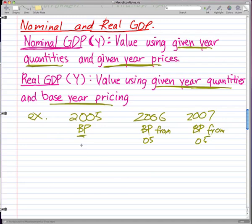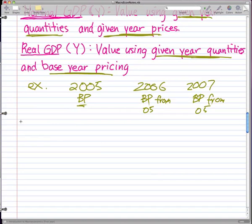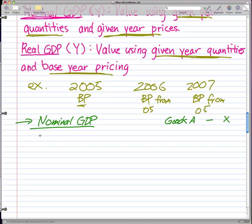So, this concept is still pretty cloudy. So then, I'll give you a short run on these two concepts to make it more clear. Nominal GDP: our definition for nominal GDP is values using given year quantities and given year prices. For example, consider that we have an economy that produces goods A to goods X.